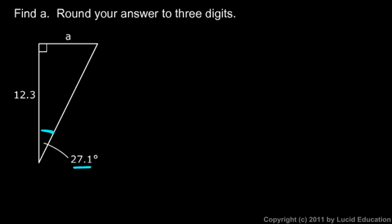Looking at this angle, which we're given as 27.1 degrees, the side we're looking for is opposite that angle, and this is the adjacent side. Opposite and adjacent tells us we can use the tangent function — the tangent of an angle is always the length of the opposite side over the adjacent side.